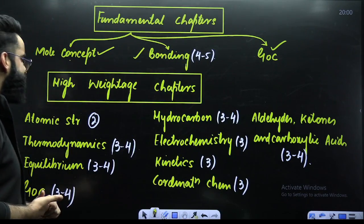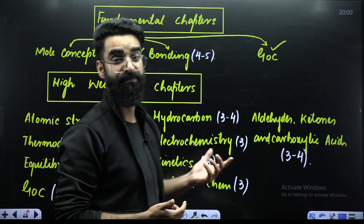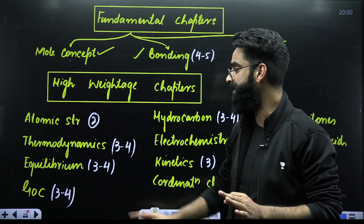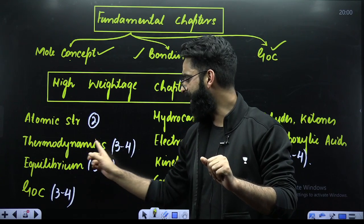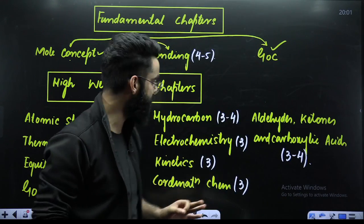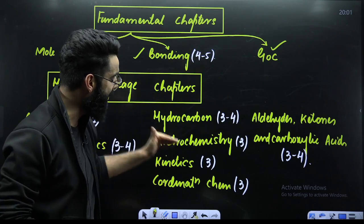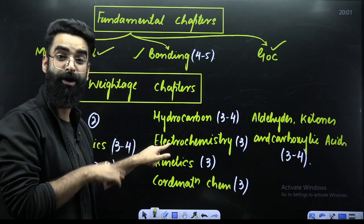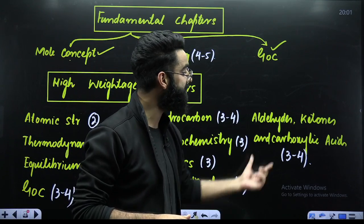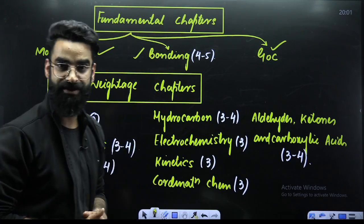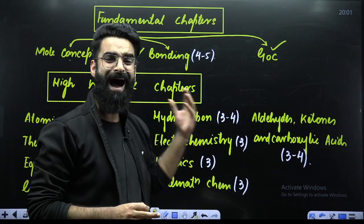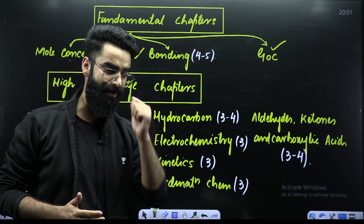What are the high-weightage chapters for NEET 2025 Chemistry? You cannot skip a single chapter from these. Atomic Structure: minimum two questions. Thermodynamics including Thermochemistry: three to four questions. Equilibrium: three to four questions. GOC: three to four questions. Hydrocarbon: three to four questions. Electrochemistry: minimum three questions — and if you add Redox with it, three to four questions combined. Chemical Kinetics: three questions. Coordination Chemistry: three questions. Aldehydes, Ketones, and Carboxylic Acids: three to four questions. And Chemical Bonding: four to five questions for sure. These are your high-weightage chapters in Chemistry.